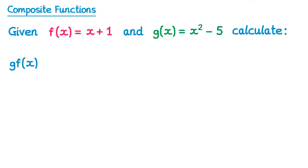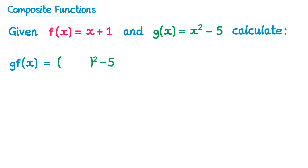The best way to write this down is to look at your g function first. So g of x is x squared minus 5 — we're going to write that out again, but instead of x's we write brackets, so it would be bracket squared minus 5. Then inside all of the brackets, you write the whole f function. So f of x is x plus 1, so we write x plus 1 inside that bracket.